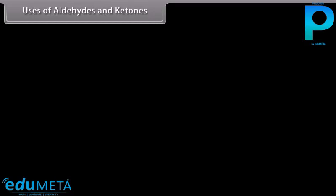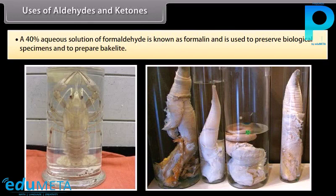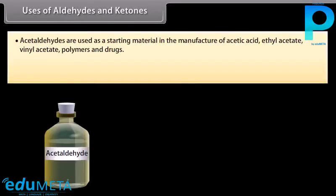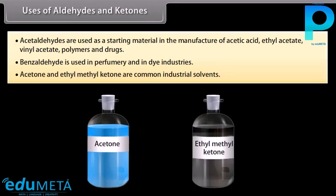Uses of aldehydes and ketones: a 40% aqueous solution of formaldehyde is known as formalin and is used to preserve biological specimens and to prepare bakelite. Acetaldehyde is used as a starting material in the manufacture of acetic acid, ethyl acetate, vinyl acetate, polymers, and drugs. Benzaldehyde is used in perfumery and in dye industries. Acetone and ethyl methyl ketone are common industrial solvents.